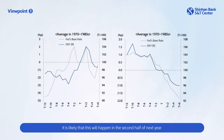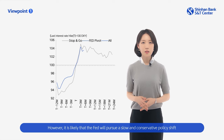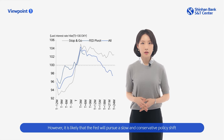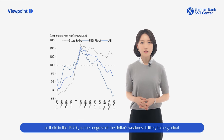It's likely that this will happen in the second half of next year, and as a result the dollar will gradually weaken over time. However, it's likely that the Fed will pursue a slow and conservative policy shift, as it did in the 1970s, so the progress of the dollar's weakness is likely to be gradual.